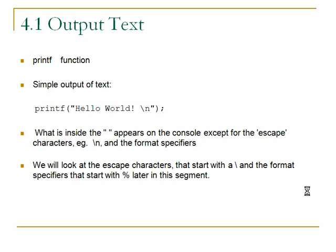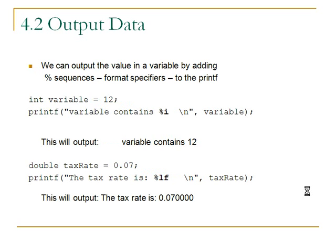If we want to output multiple lines we can use as many backslash n's as we want. We also have something called a format specifier inside the double quotes, which starts with a percent sign. Some people call them percent sequences, but it's more correct to call them format specifiers. Here's your first example: we have an int variable called variable and the format specifier is %i. This would output the value 12 — the value in the variable outputs to the console in the position of the format specifier.